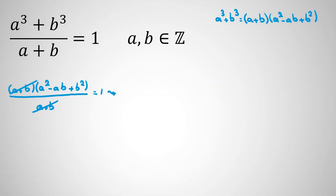In the next step, we can conclude that A squared minus AB plus B squared equals 1.